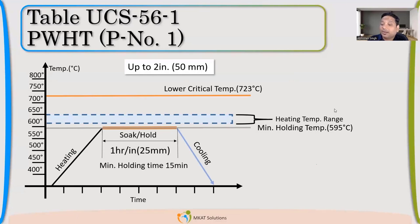Whenever you see the code, it's very clearly specified that this 595 degrees Celsius is the minimum holding temperature. So I need to maintain my furnace temperature above it, right? Because I don't want to go below. I can go more than that.